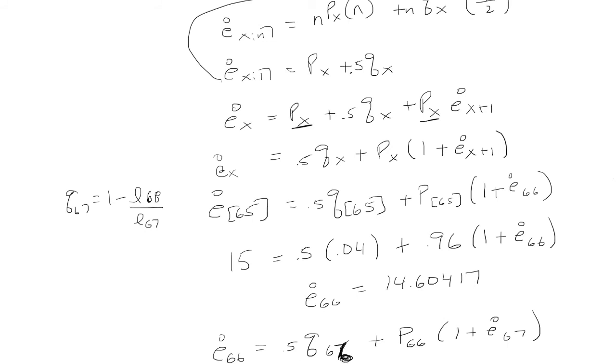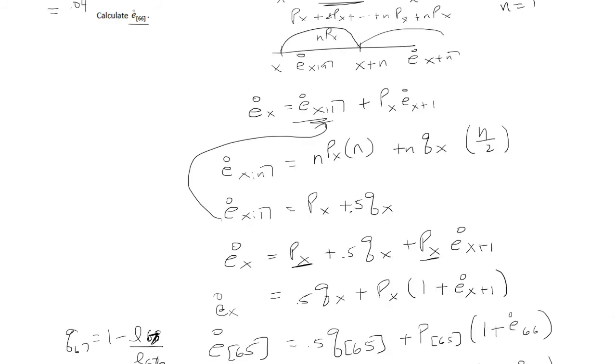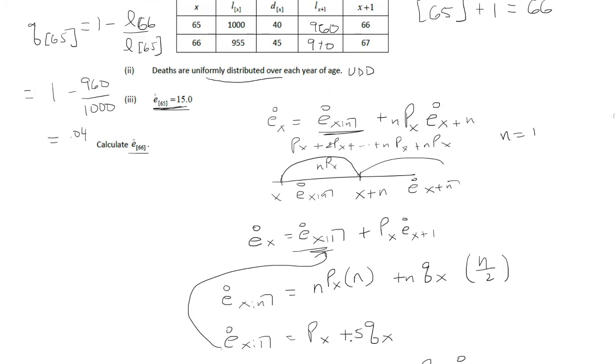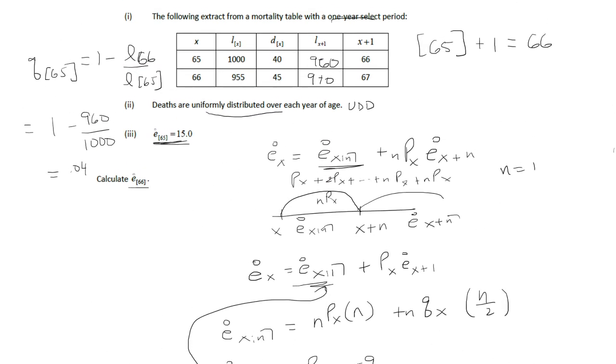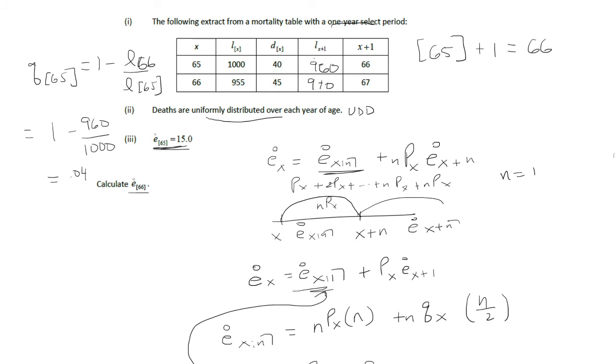Yeah, so we want to keep it the same age, so this will be 67 over 66. Okay, so that's going to be these guys over here. Notice it doesn't have a bracket, this does, so we don't want to use the 955.